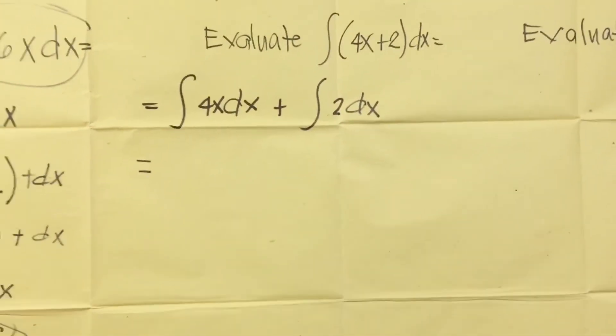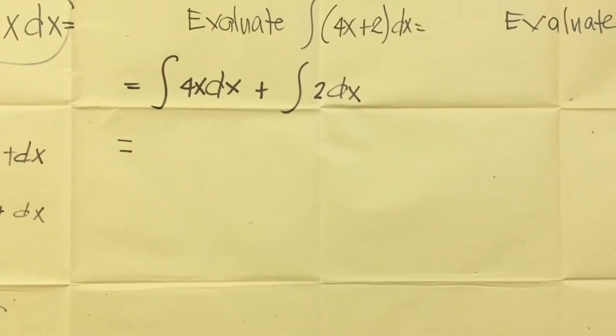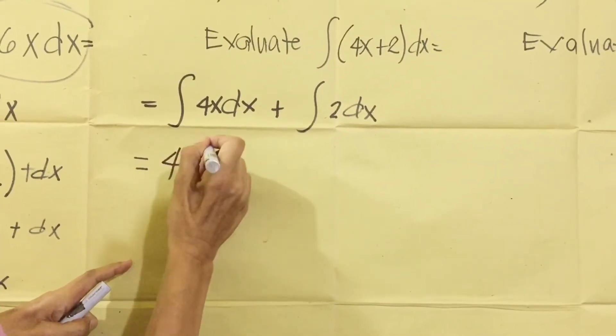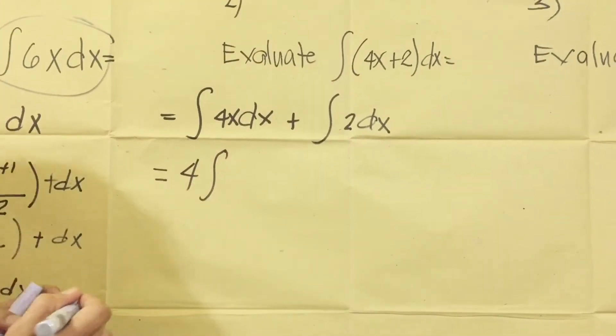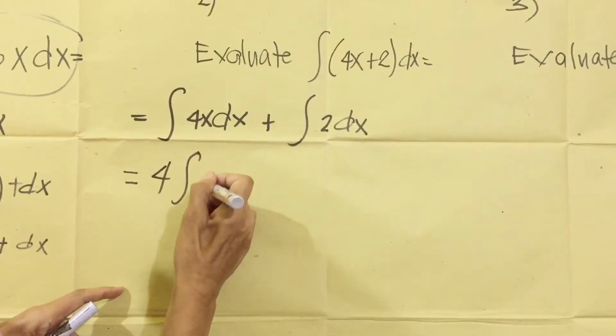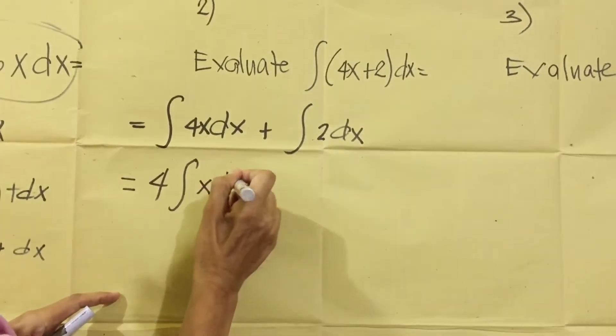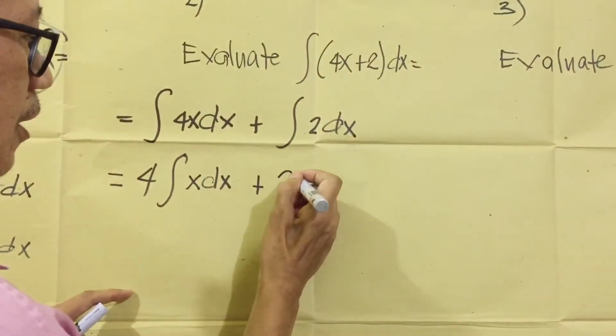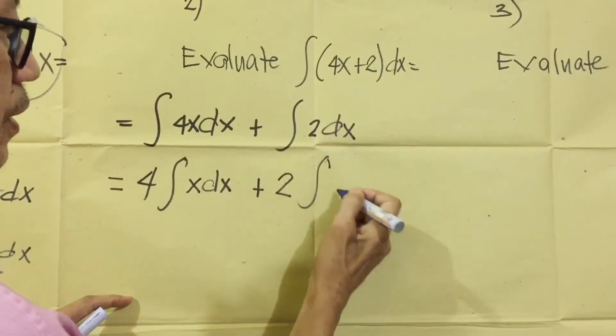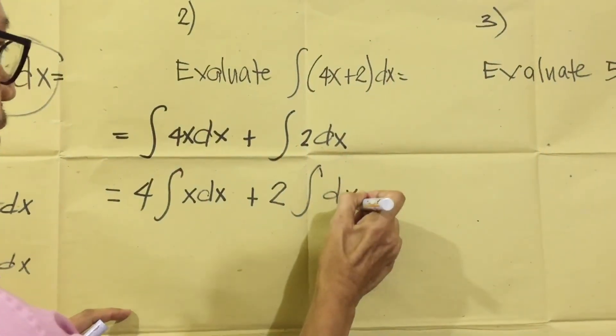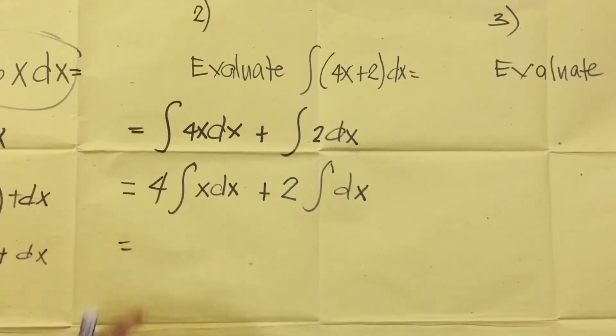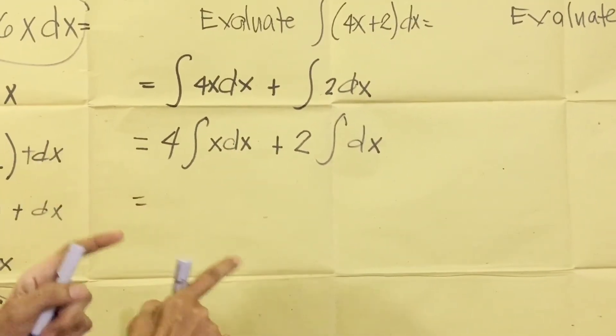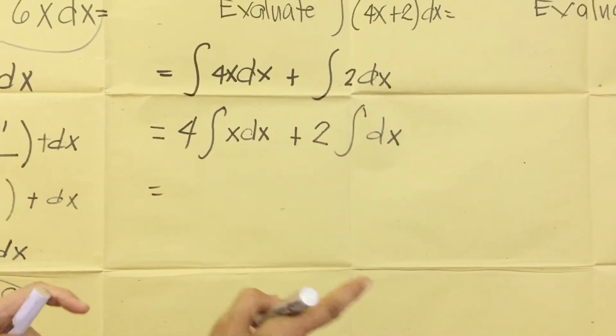After that, we follow formula number three. The constant four, we place in front. Then followed by the integral sign or symbol. Copy the variable X dx. Then plus, the constant two. Copy the integral sign, then DX. Next, we need to extract the integral sign. Extract meaning, remove it.